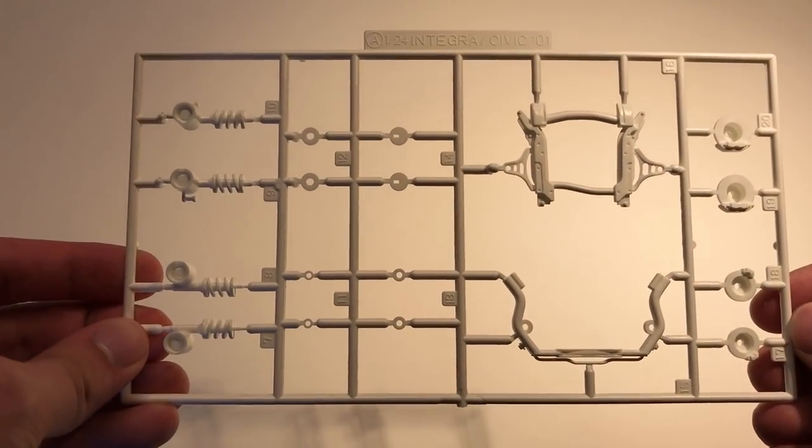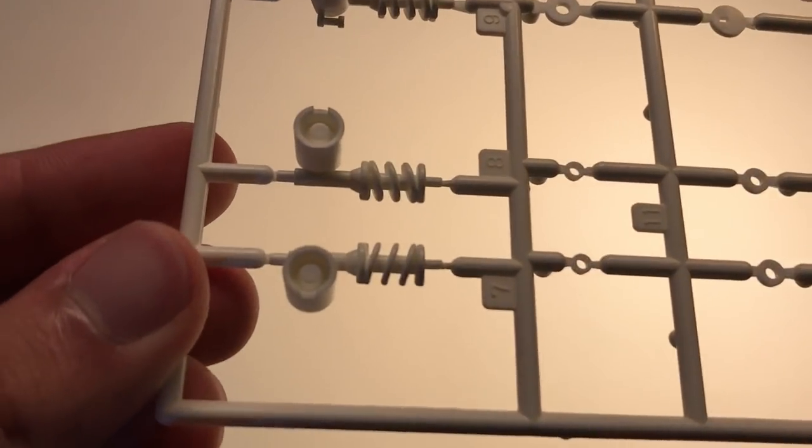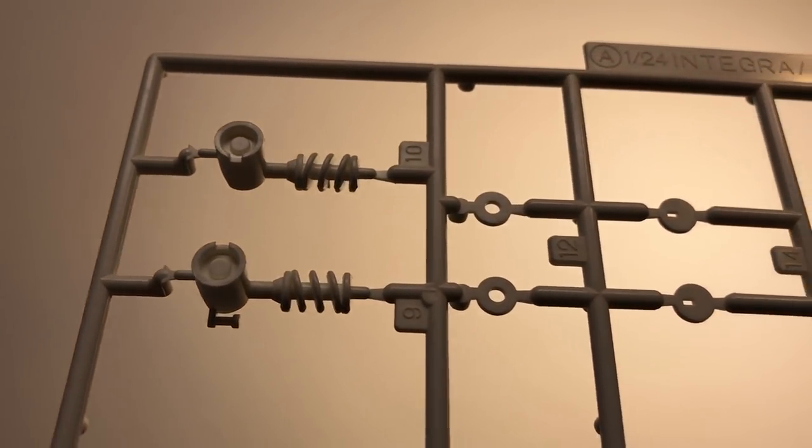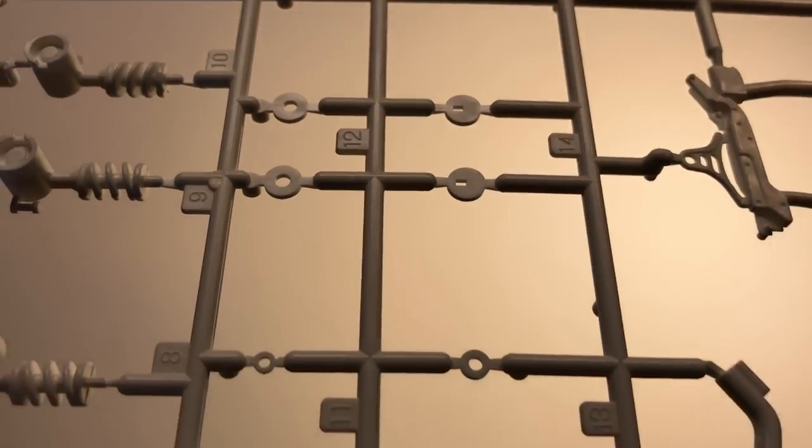All of the remaining stuff for the chassis like some of the springs and suspension components are molded on a separate sprue. Again, nothing really special but at least some of the details are there.